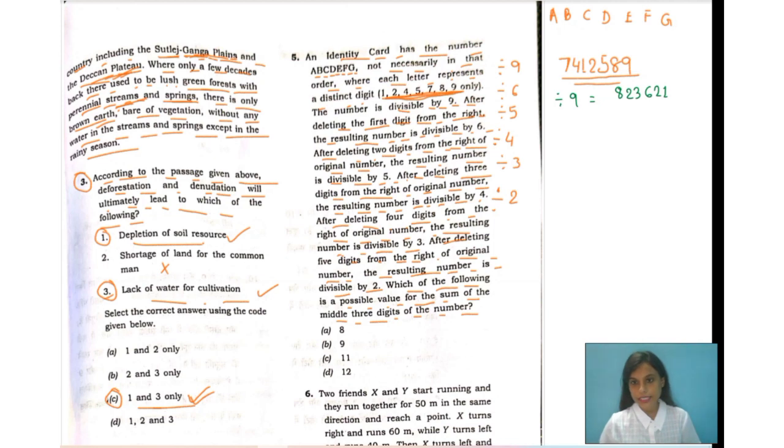Let's check by the second condition that they have given. After removing the first digit from the right, the resulting number is divisible by 6. Now let's remove the last digit from the right side and divide it with 6 and check whether it is going or not. It's coming to 123,543. It's getting divisible by 6.